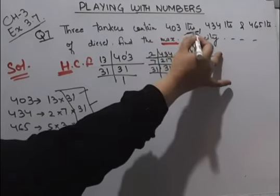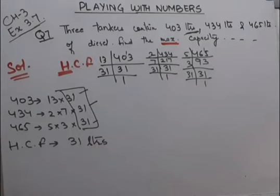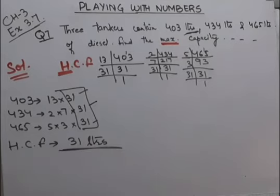Here we have the unit as litre, so 31 litres. So the maximum capacity of the container that can measure all 3 of them will be 31 litres. Us container ki capacity kitni honi chahiye? 31 litres.